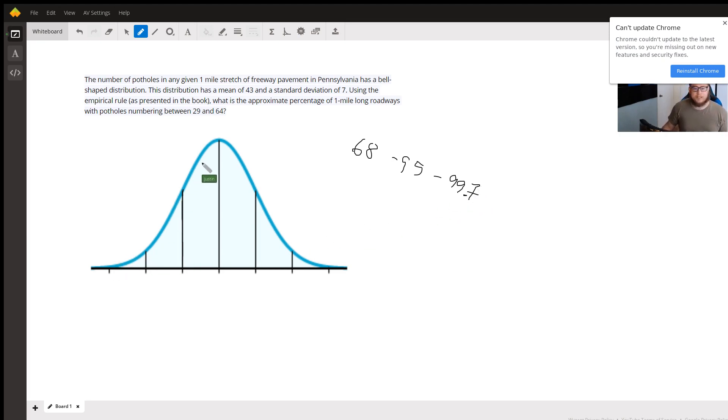So let's fill in this blank normal distribution curve here to see what all this means. We know that the mean, or the average number of potholes that you would expect to see for a one mile stretch of road is 43. So the average is 43. We always put the average right under the peak of our normal distribution.